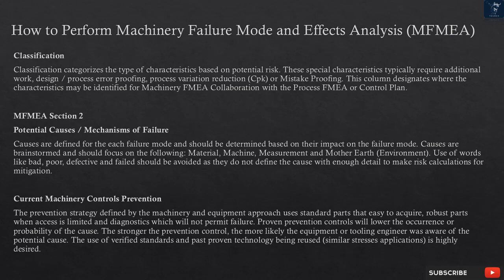Current Machinery Controls — Prevention: the prevention strategy uses standard parts that are easy to acquire, robust parts when access is limited, and diagnostics which will not permit failure. Proven prevention controls will lower the occurrence or probability of the cause. The stronger the prevention control, the more likely the equipment or tooling engineer was aware of the potential cause. The use of verified standards and past proven technology being reused in similar stress applications is highly desired.